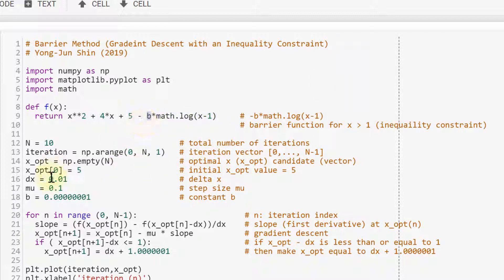this b constant defined here. It's a very small positive number. In this for loop we have slope defined and this is the gradient descent method.